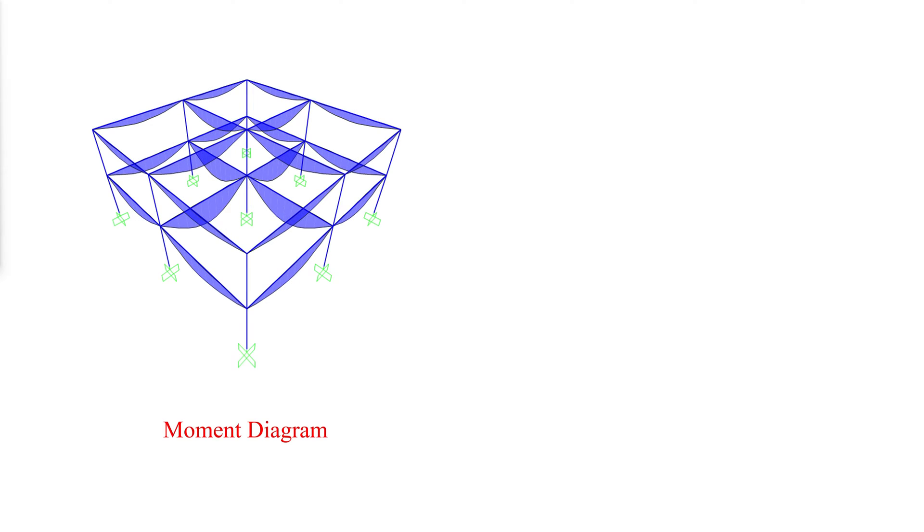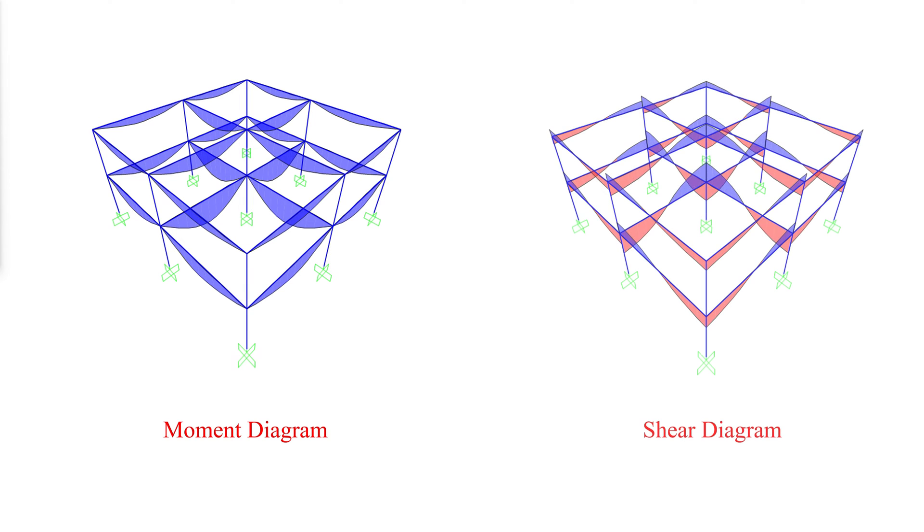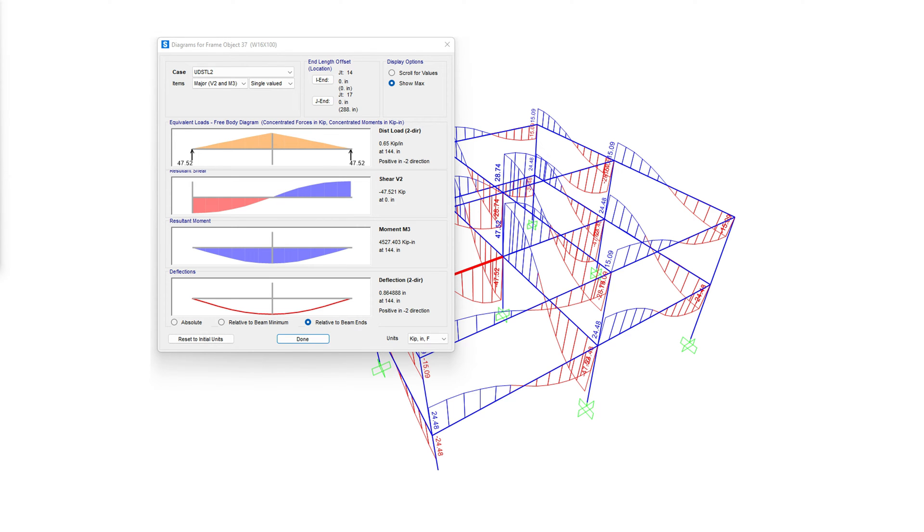After running the analysis with the loads and load combinations, we first look at the moment diagram to confirm that the ends of the beams in fact have zero moment. Afterwards, we draw the shear diagram for all load combinations individually and extract the maximum shear value at the intersection between beam and column. We can then have a closer look at the member and extract the numerical value of shear at the member end, which in this case is 47.52 kips.